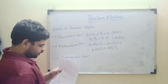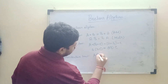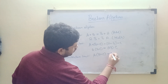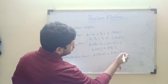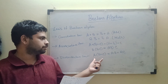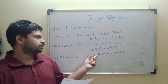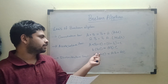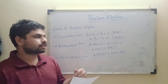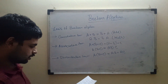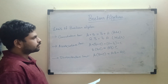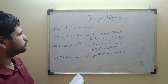The third law is the distributive law, which states that A·(B + C) = A·B + A·C. The multiplier A distributes across the addition — A multiplies B first, then A multiplies C, giving A·B + A·C. These are the main three laws of Boolean algebra.